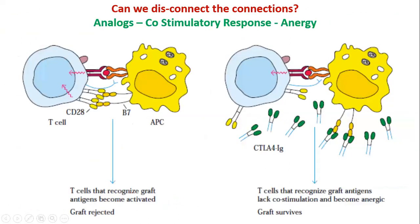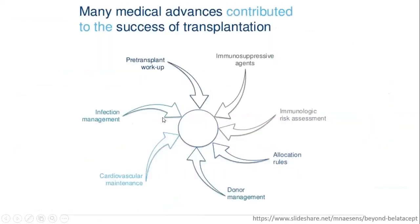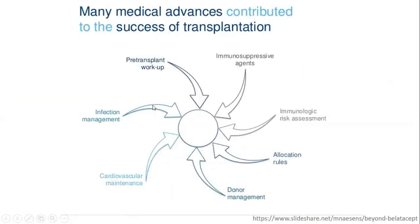By replacing co-stimulatory connections with analogue molecules such as CTLA4-Ig, the antigen co-stimulation process is blocked. T cells that would normally recognize graft antigens and become activated — leading to graft rejection — are inhibited. Replacing these yellow co-stimulatory signals with green analogue molecules prevents graft rejection through co-stimulation blockade.